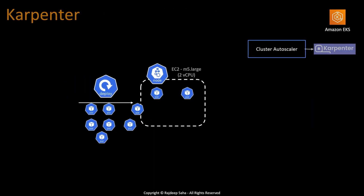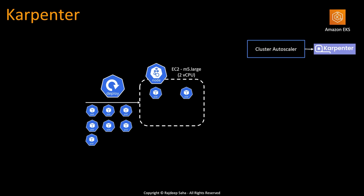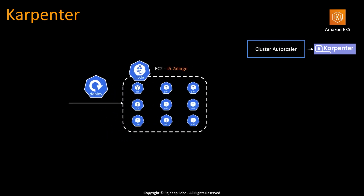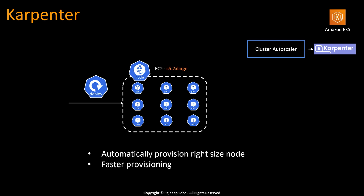Now if we look at the same scenario with Karpenter: let's say you have one worker node running with two pods, and seven pods need to be scheduled. Instead of spinning up multiple EC2s of the same type, Karpenter will spin up the appropriate EC2 node — let's say c5.2xlarge — and put all the pods in the same EC2. So Karpenter will automatically provision a right-sized node.